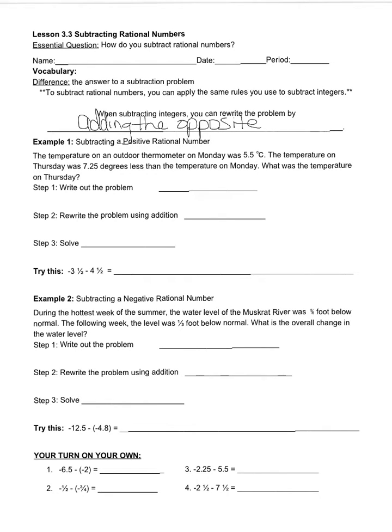Our first example, we are subtracting a positive rational number. The temperature on an outdoor thermometer on Monday was 5.5 degrees Celsius. The temperature on Thursday was 7.25 degrees less than the temperature on Monday. What was the temperature on Thursday?